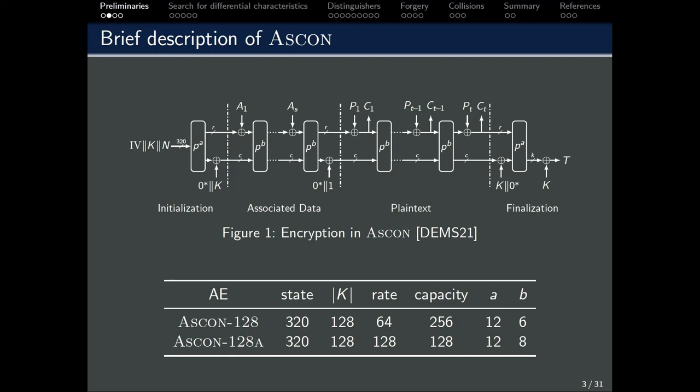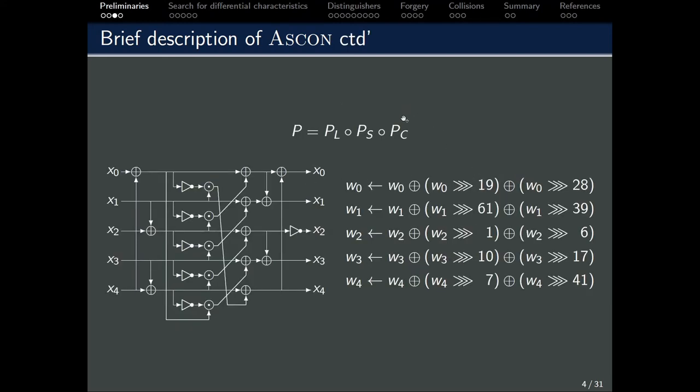As our work focuses more on finding the differential characteristics for the ASCON permutation, we will now take a closer look at the round function of the ASCON permutation itself. The state size of ASCON is 320 bits. It can be visualized as a 5x64 bit array. There are three sub-functions in the permutation. PC refers to the addition of constants, which we will largely ignore here, since the difference is not affected by this sub-function. PS is the substitution layer, which consists of 64 parallel 5-bit S-boxes acting on each column of the state. The S-box is shown over here. PL is the linear layer given by the equations over here. Each Wi corresponds to the i-th row of the state, which has 64 bits.